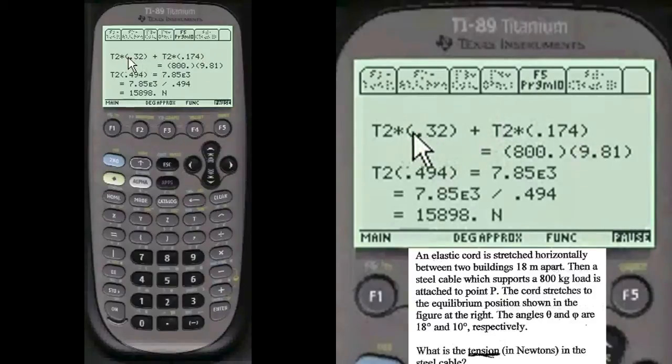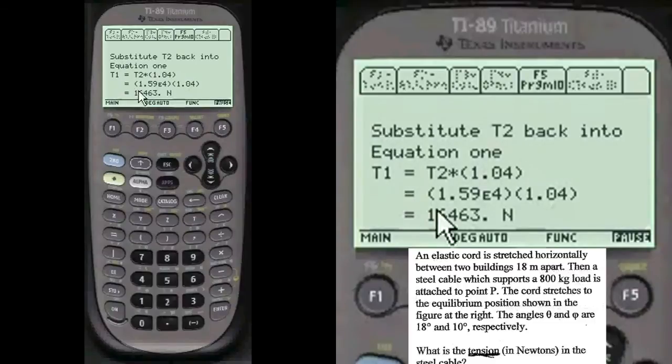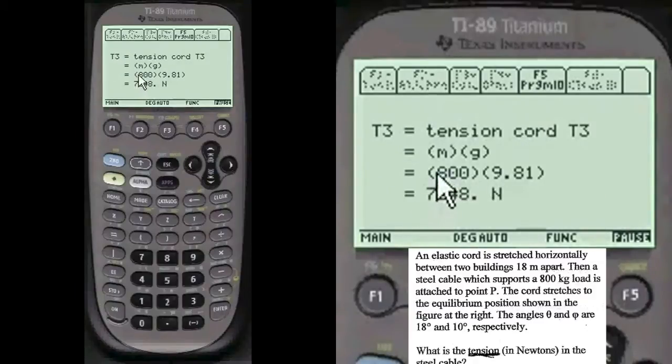And so the tension of T2, which would be on that side of the picture is 15898 Newtons. And the T1 tension is 16463 Newtons. Notice the credit that you get on this problem. In other words, there's 10 points for doing this one here, which is just the tension on the corridor is mass times acceleration. And that's 7848. You've got 10 points for this. The other ones are 5 points a piece.